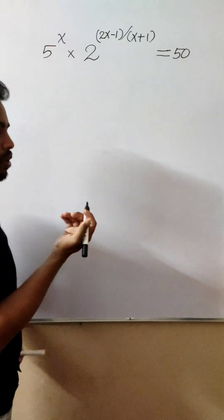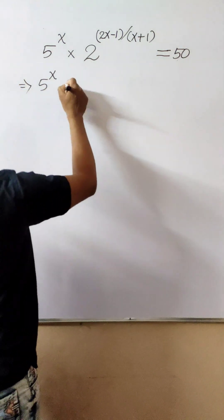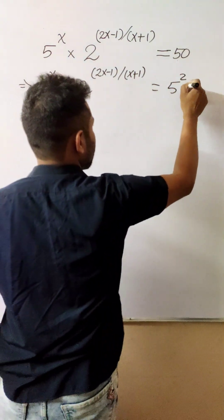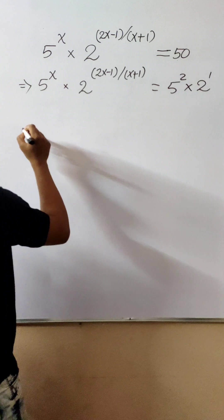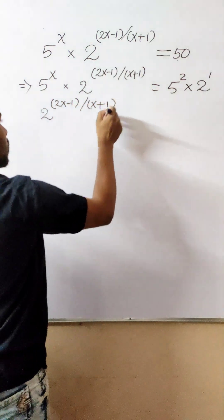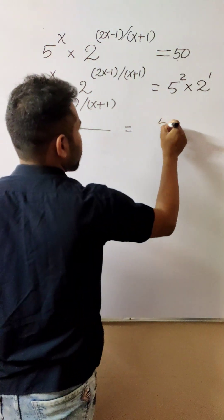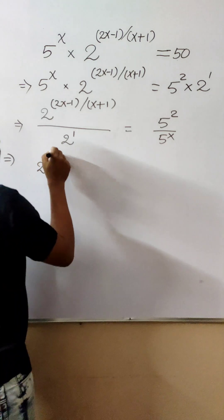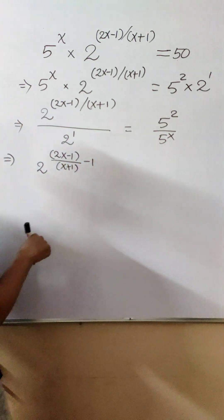Here we will prime factorize 50 and equate. So this is (2x-1)/(x+1) equals 5 squared times 2. Therefore, you can clearly see that we can simplify this to 2^((2x-1)/(x+1)-1).